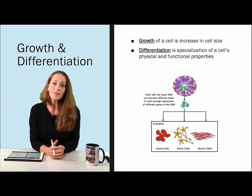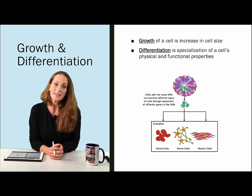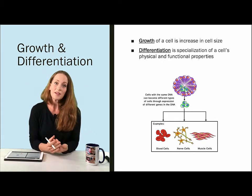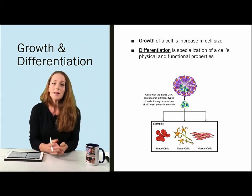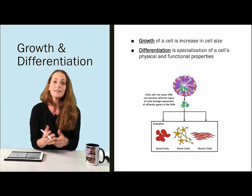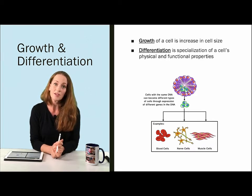When we define growth, growth of a cell is technically an increase in size, done by adding components of the cell — different organelles, different proteins, parts of the cytoplasm. And there are growth phases within the cell cycle. When we talk about differentiation, that is specialization of a cell, and it relates to the specific gene expression we talked about in the previous lecture. Some portions of that cell's genome will be repressed and others will be expressed so that the cell has specialized structure and function for the job it does within the body. There are many different cell types in the body and a range of gene expression happening for those cells to become specialized in their function.